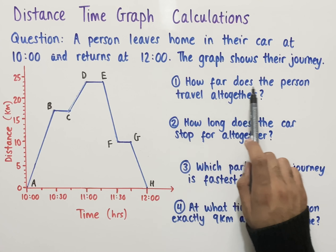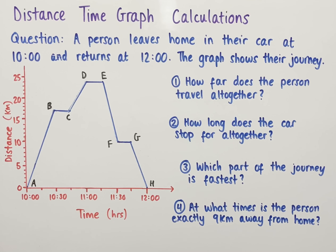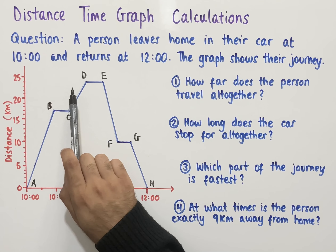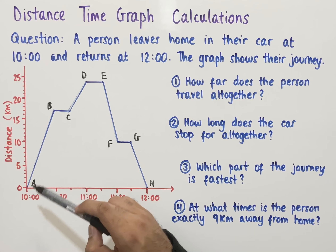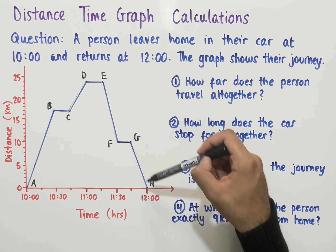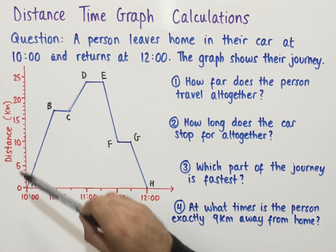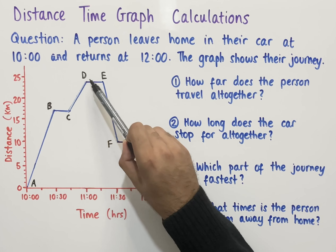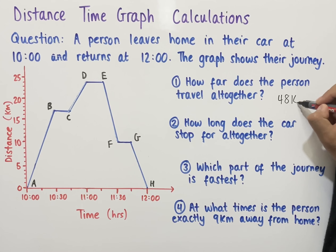The first question asks how far does the person travel altogether. On our distance-time graph we need to look at the total distance. Starting at A we have 0 kilometers from home, and the highest point on the graph tells us the furthest distance, which occurs at D and E — 24 kilometers. The car then returns home, traveling a further 24 kilometers. So 24 plus 24 gives us 48 kilometers in total.